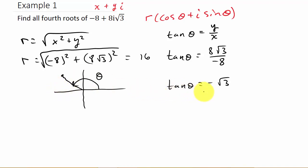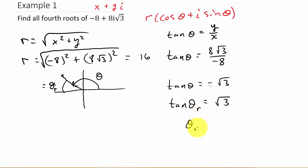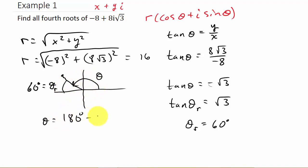So to calculate this, I need my reference angle. Remember, to find your reference angle, we have tangent of theta sub r equal to the positive value of square root of 3. The inverse tangent of square root of 3 is 60 degrees, so my reference angle is 60 degrees. Now I can get theta: theta is equal to 180 minus 60 degrees, which is 120 degrees.